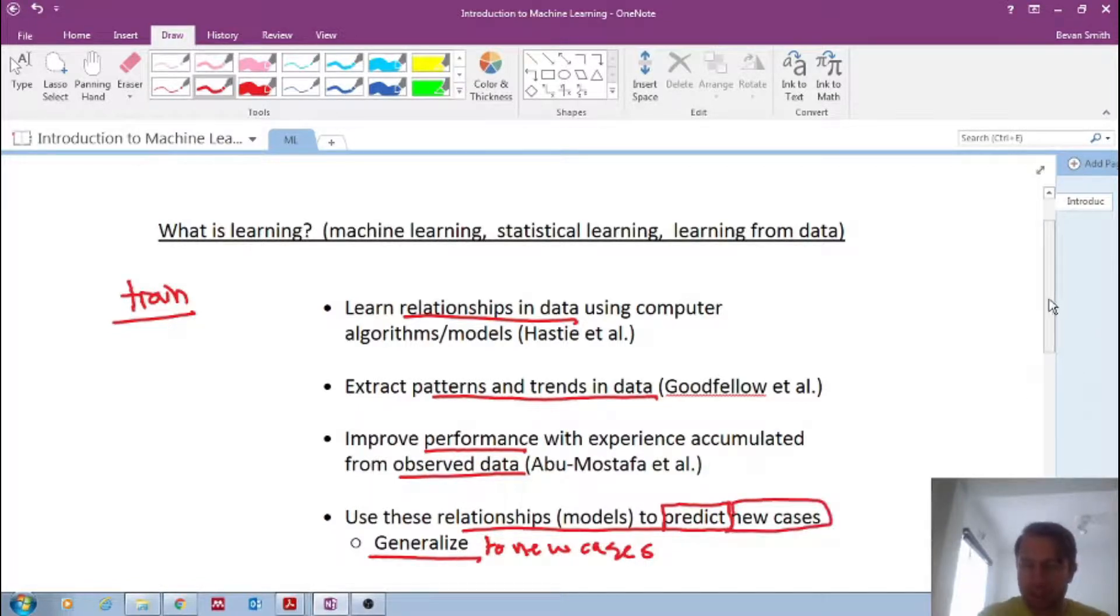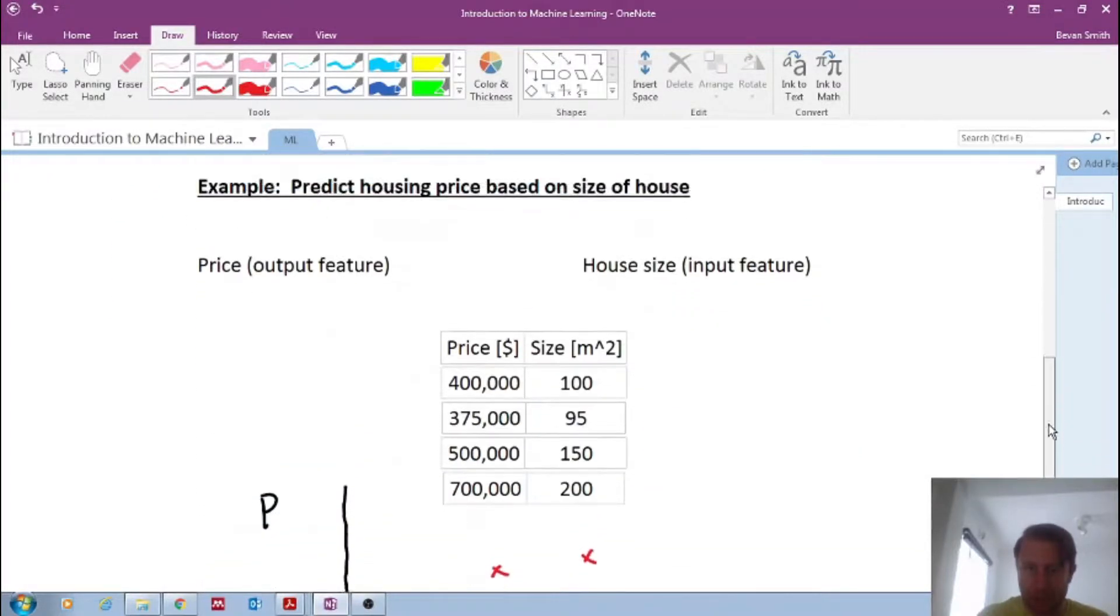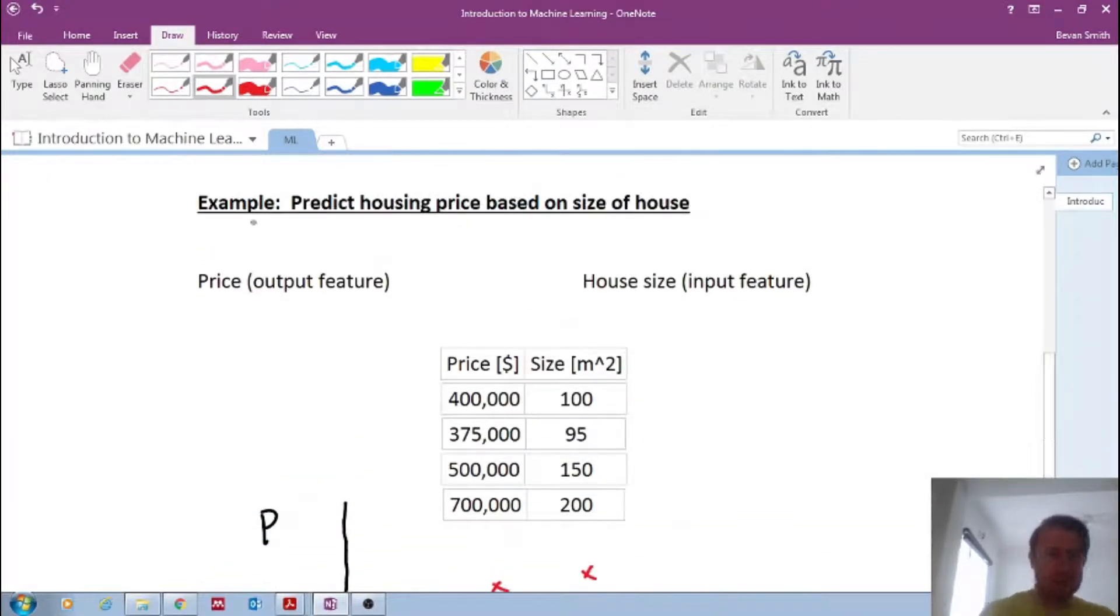So let's look at a very simple example to get the intuition behind it. So this simple, intuitive example is we want to predict housing price based on the size of a house.